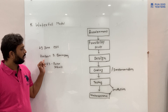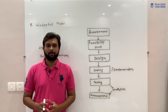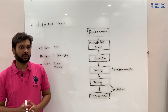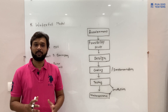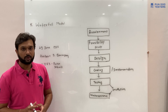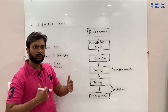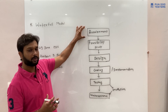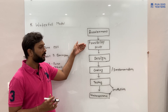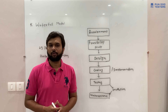In 1956, Herbert Bennington described the waterfall model for the first time. Before that, it was derived from mechanical engineering. The model is named 'waterfall' because of how it looks — you move continuously in a linear sequential pattern, and once you complete a phase you do not go back to the first stage. That's why this model is called the waterfall model.